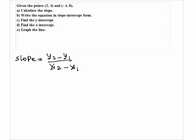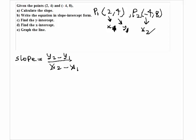If I assume the first point is point 1, which is (2, 4), then this number would be x1 and this number would be y1. If I assume the second point is point 2, then the first number here would be x2 and this number would be y2.